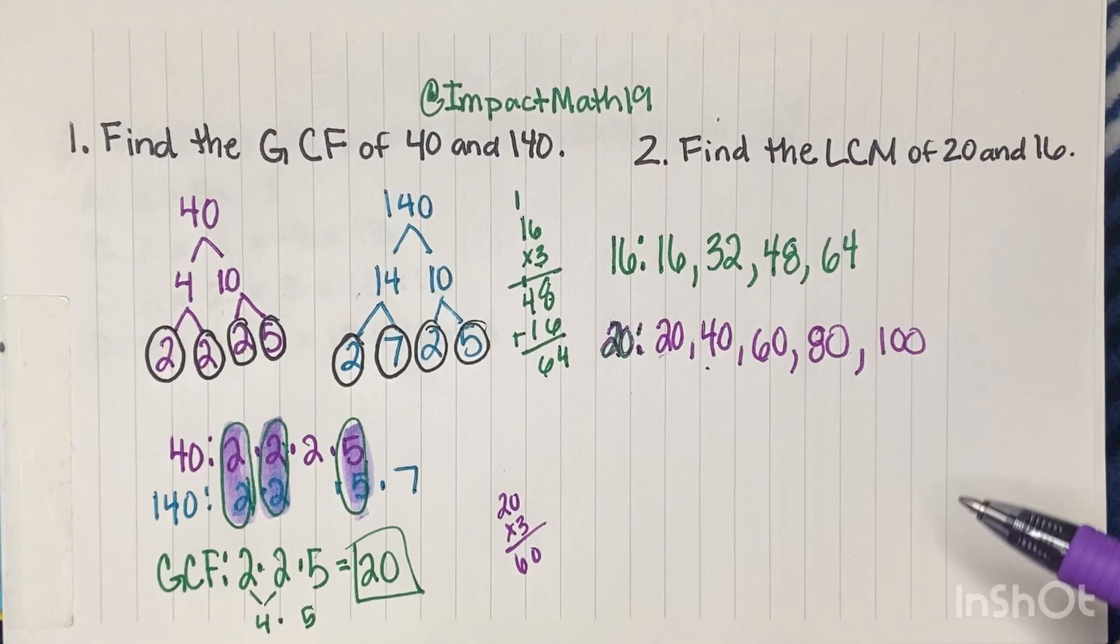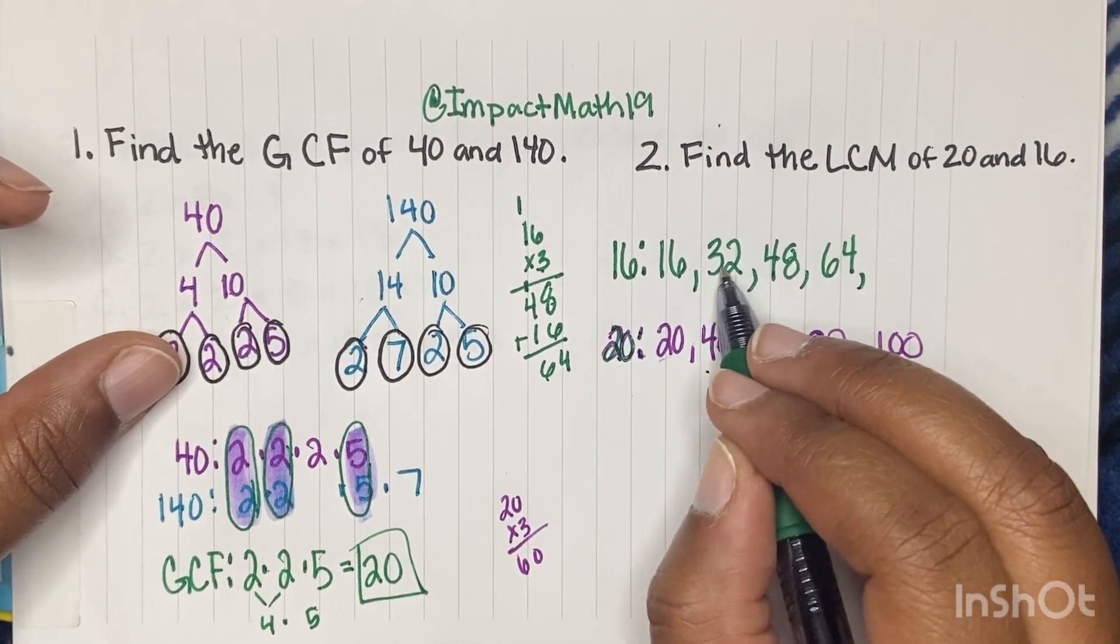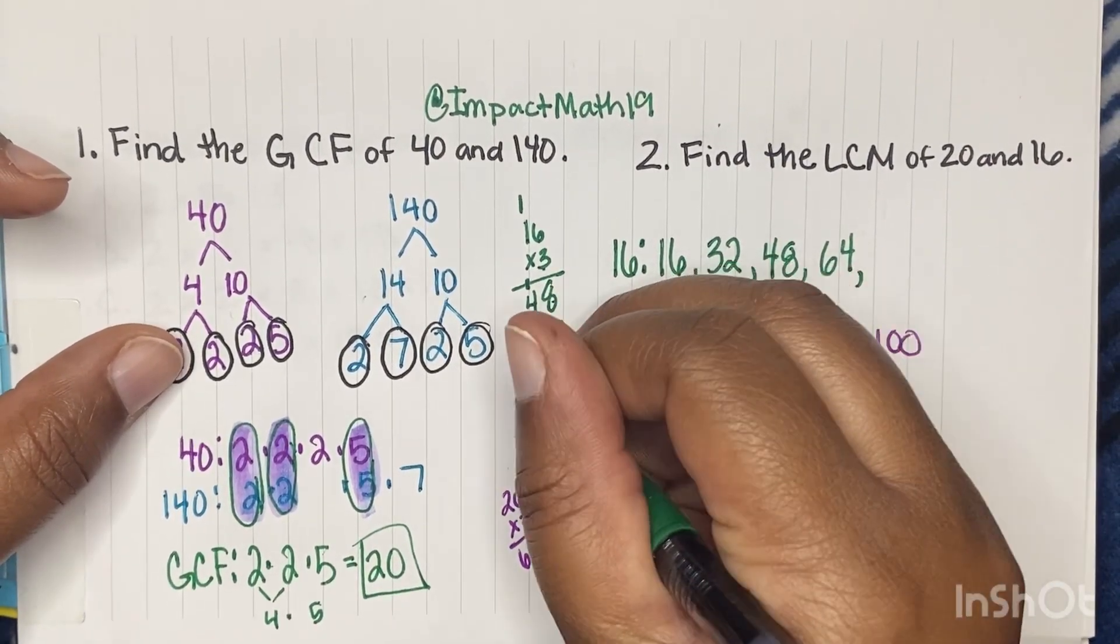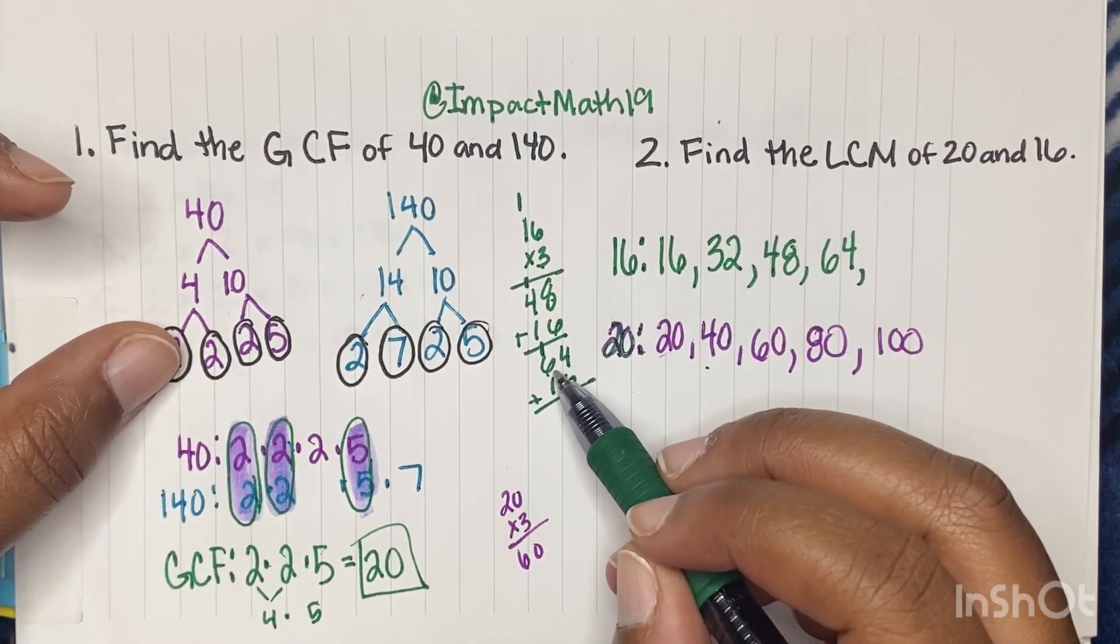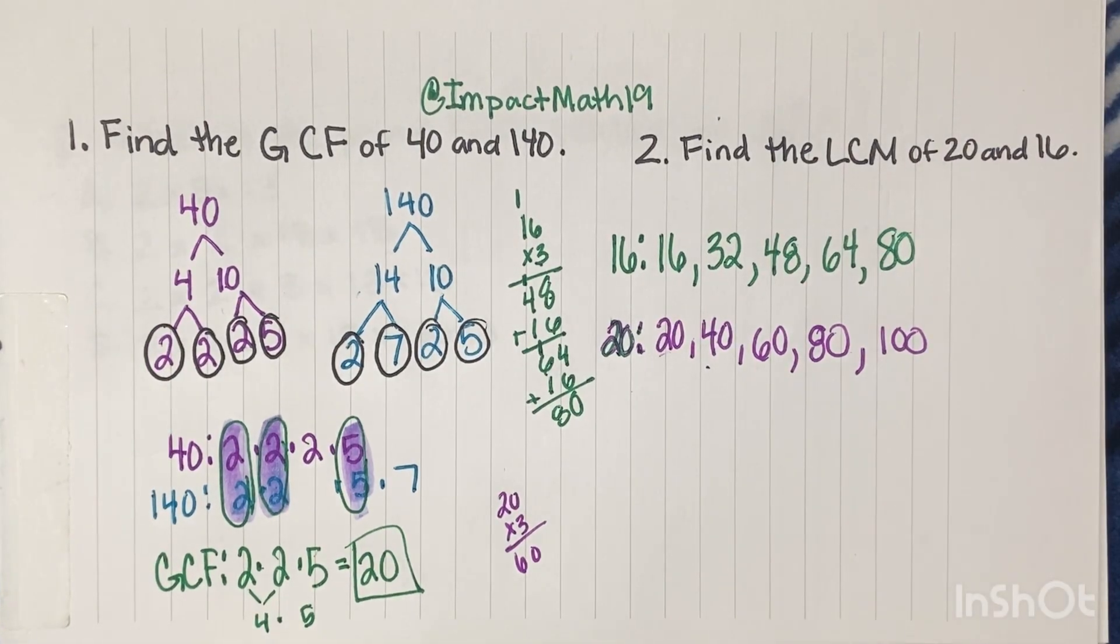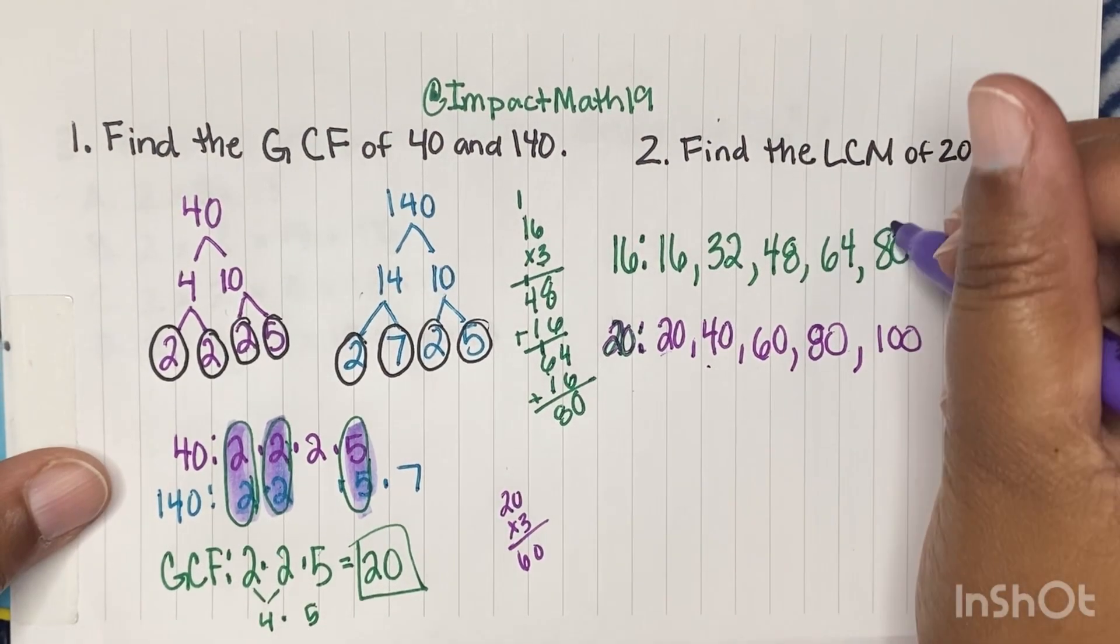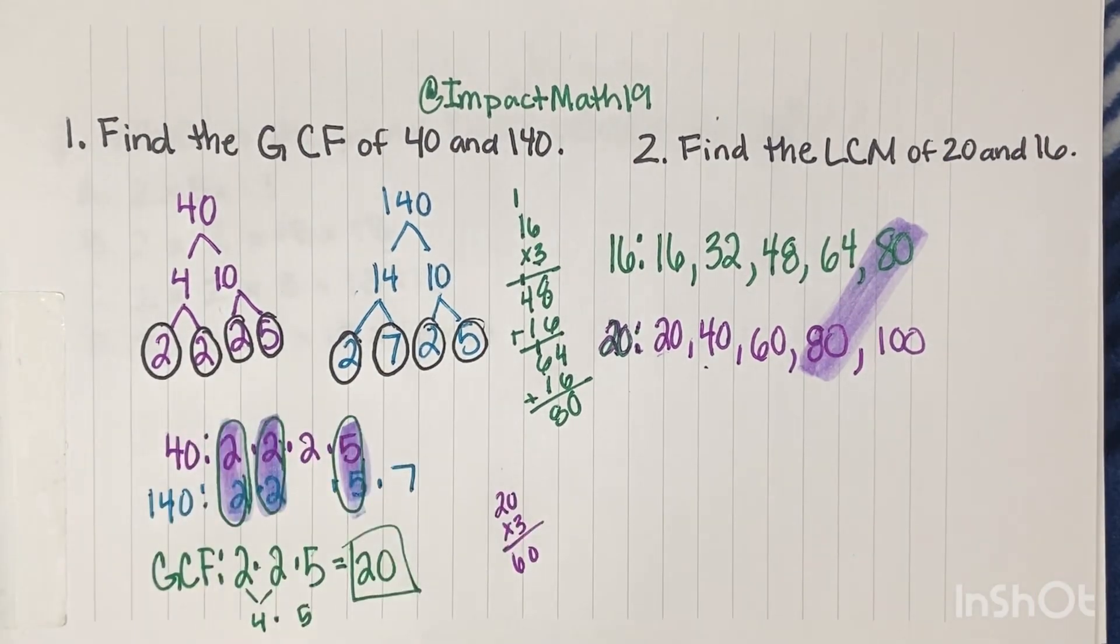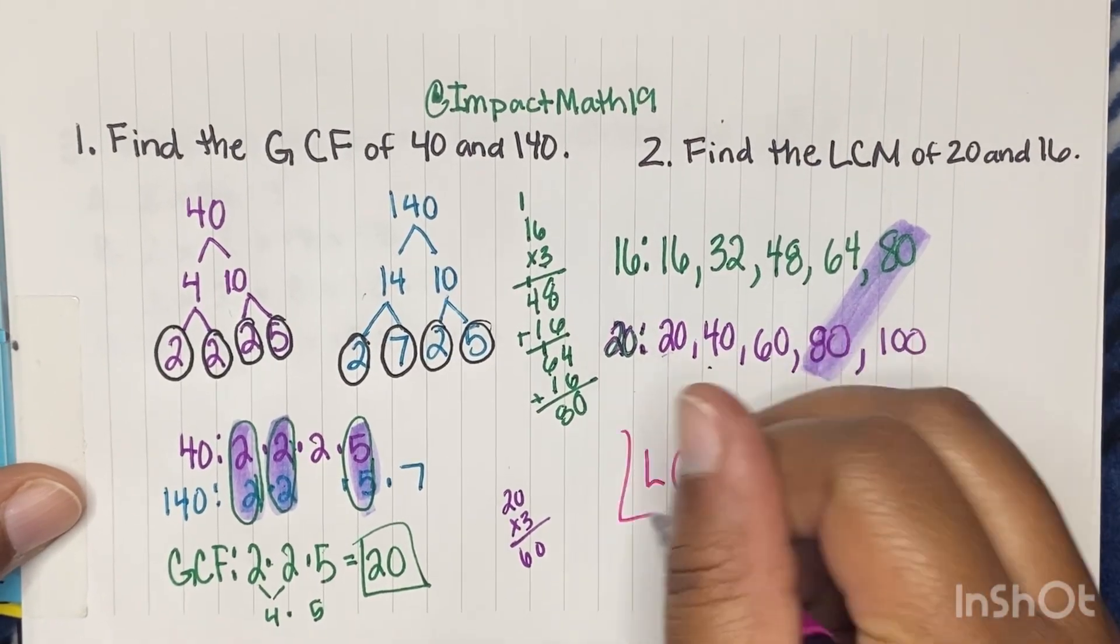So right now, we're looking, we still don't have any common multiple yet. So let's return back to our 16. So we were on the fourth. Let's do the fifth multiple by adding another 16. So 6 plus 4 gives us 10, carry the 1. And then 6 plus 2 gets us 8. So 80. We just found our first common multiple. And it's the least common multiple. That means it's the smallest one. So our LCM is going to be 80 for number two.